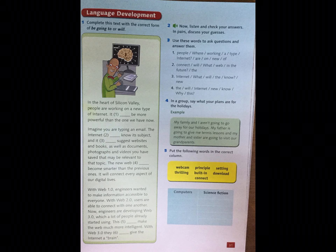With web 3.0 they are going to give the internet a brain. So let me give the answers: number one is 'will', two is 'will', three is 'will', four is also 'will', five is 'going to', six is 'are going to'.